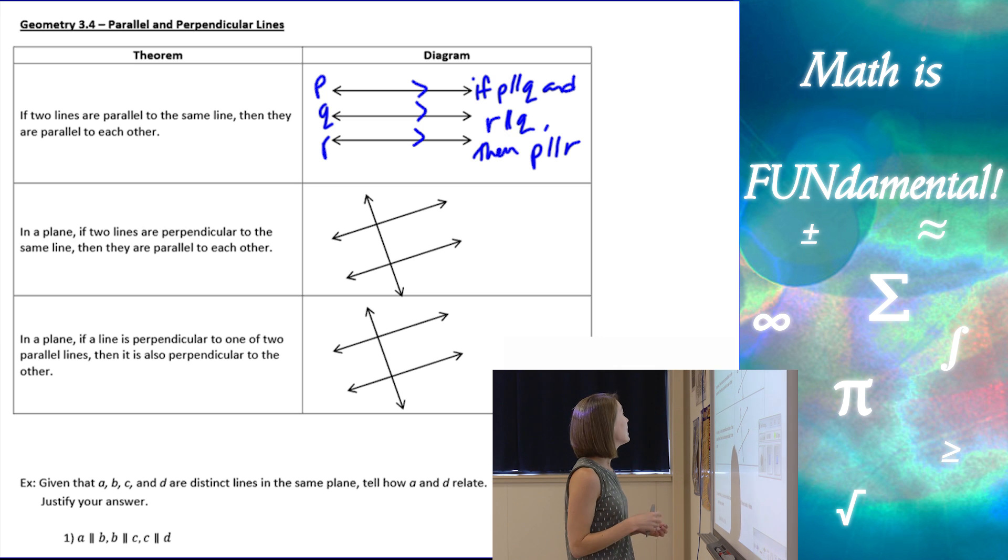All right, next one says, in a plane, so it has to be all coplanar lines, if two lines are perpendicular to the same line, then they are parallel to each other.